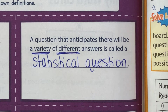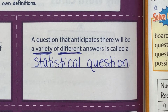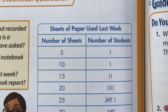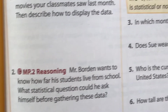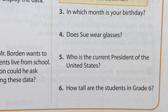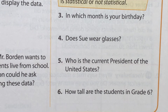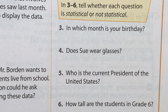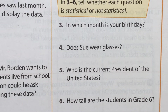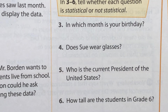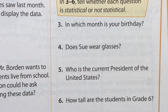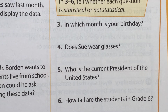Let's look at some examples. I'm turning to page 751, and I would suggest turning there as well so you can follow along. In problems three through six, we need to tell whether each question is statistical or not statistical. If it is statistical, it follows the definition — it has a variety of different answers.